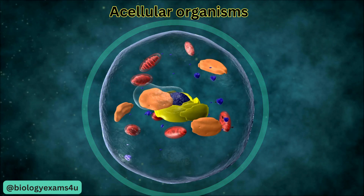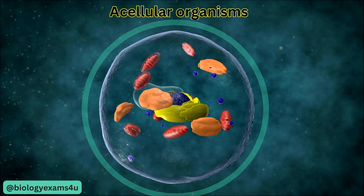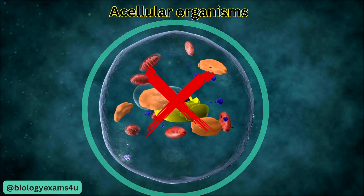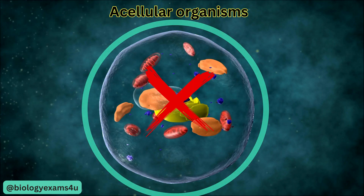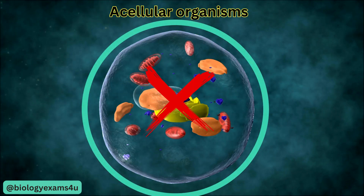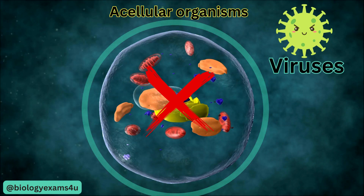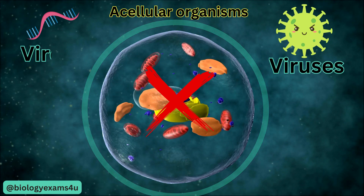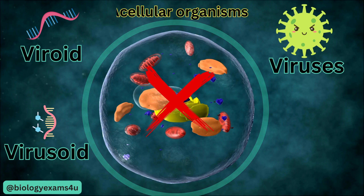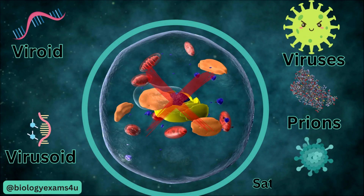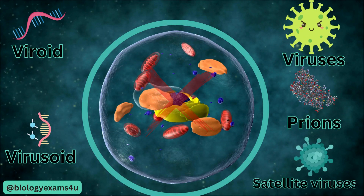Acellular organisms are organisms that do not have cells. The most well-known acellular organisms are viruses. Other acellular organisms include viroids, virusoids, prions, and satellite viruses.